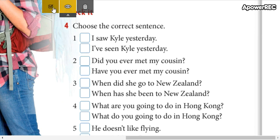Number two: 'Did you ever met my cousin?' or 'Have you ever met my cousin?' The answer is the second, because it says from before until today - 'have you ever,' not 'did you ever.'